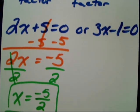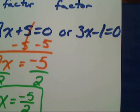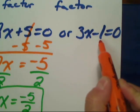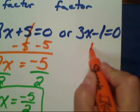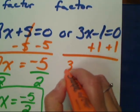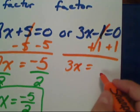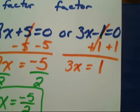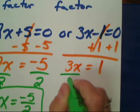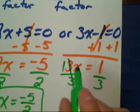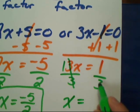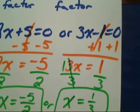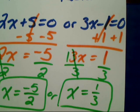Don't forget you have a second equation to solve: 3x − 1 = 0. Get the term with the variable by itself by adding one to both sides. A negative and positive make zero; now divide both sides by three. Three divided by three is one, so X equals one-third. Our two solutions are X equals negative five-halves or X equals one-third.